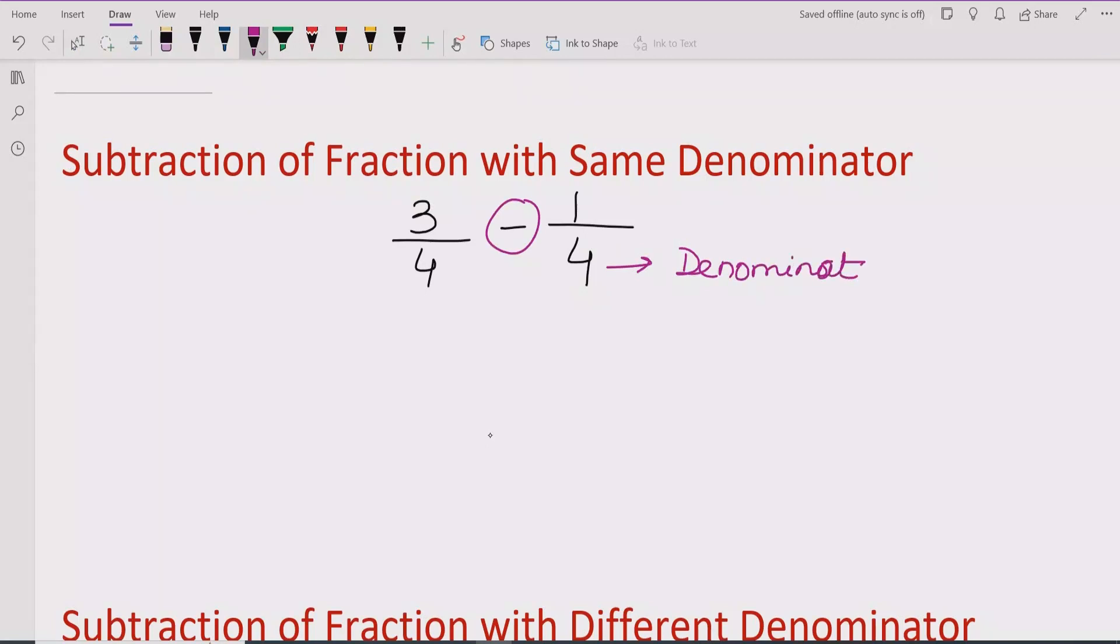So we have to simplify this very easily like because we have the same number, so we will write it one time and denominator we will write as it is. 3 minus 1, 3 minus 1. So here we have 3 minus 1 is 2 and upon 4.